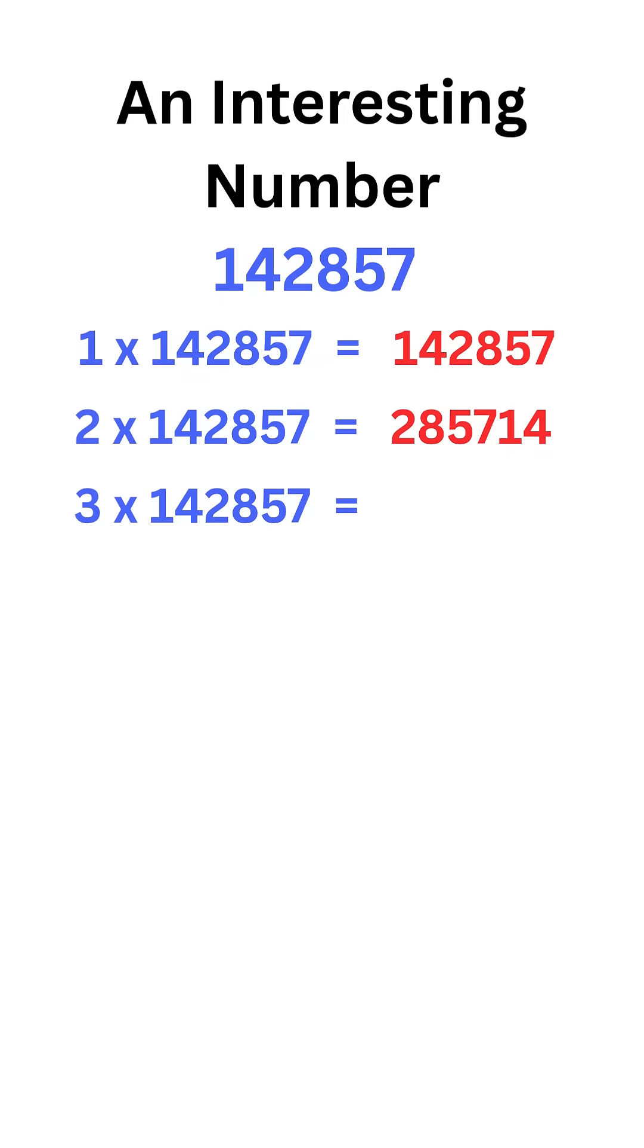Then, multiply 142,857 with 3. We get 428,571. Ah, we got it. Notice the digits 1, 4, 2, 8, 5, 7 just rotate positions.